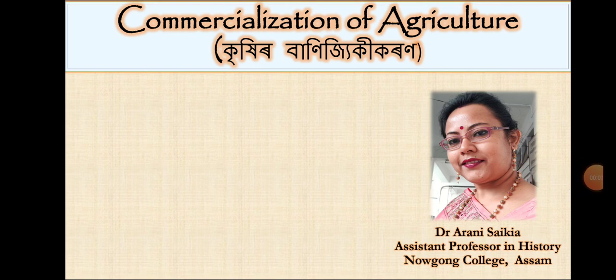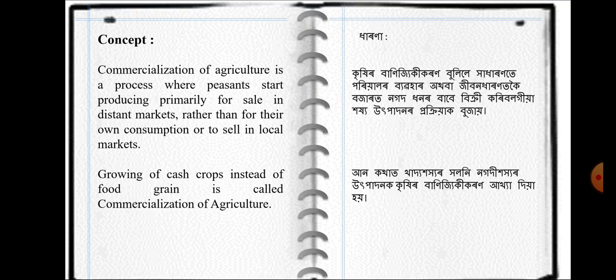Welcome to yet another class of modern Indian history. I am your guide in history. We are going to have a discussion on commercialization of agriculture. You are aware of the fact that commercialization of Indian agriculture had a distinct role to play in colonial economy. At the outset we would look at the concept of commercialization of agriculture — it is a process where peasants start producing primarily for sale in distant markets rather than for their own consumption or sale in local markets.